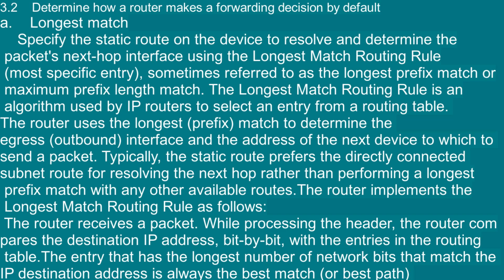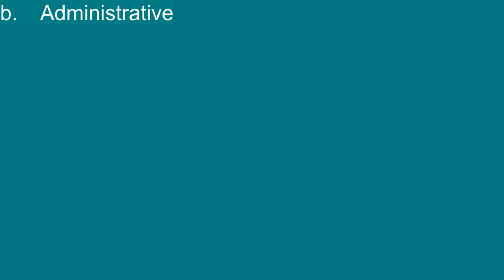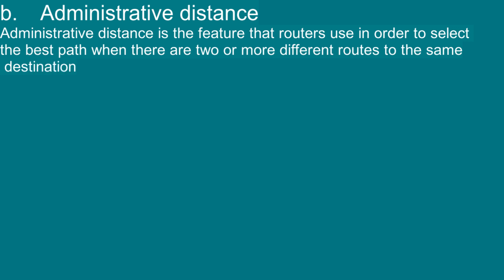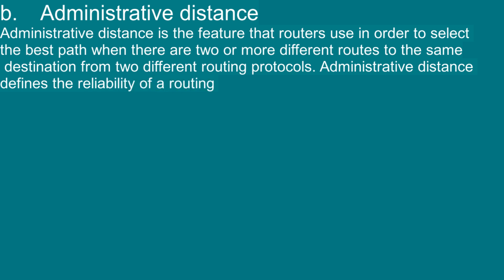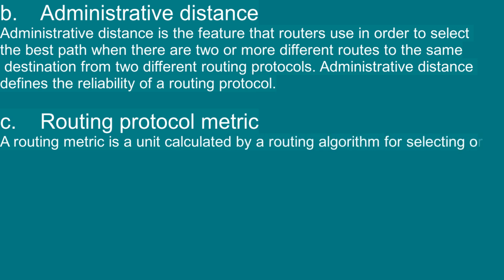Longest match example: the router receives a packet with a destination IP address of 192.168.1.33. The routing table contains the following possible matches: 192.168.1.32/28, 192.168.1.0/24, and 192.168.0.0/16. B — Administrative distance defines the reliability of a routing protocol and is used to select the best path among routes from different routing protocols. C — Routing protocol metric is a unit calculated by a routing algorithm for selecting or rejecting a routing path.